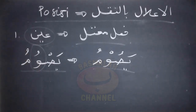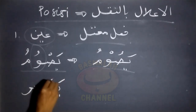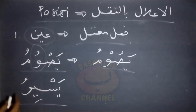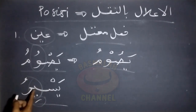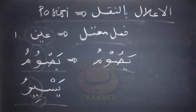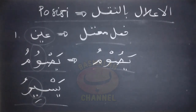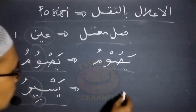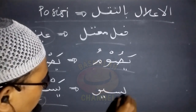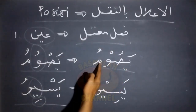Contoh yang lain seperti lafad yasiru. Pada lafad yasiru, ain fi'ilnya berupa huruf ya, dimana huruf ya disini berharkat kasro, sementara huruf sebelumnya adalah berupa huruf sohe yang dalam keadaan sukun. Bacaan seperti ini menurut orang Arab dianggap berat, oleh karena itu harus dilakukan penukaran harkat supaya bacaannya menjadi ringan, sehingga yasiru akan berubah menjadi yasiru.